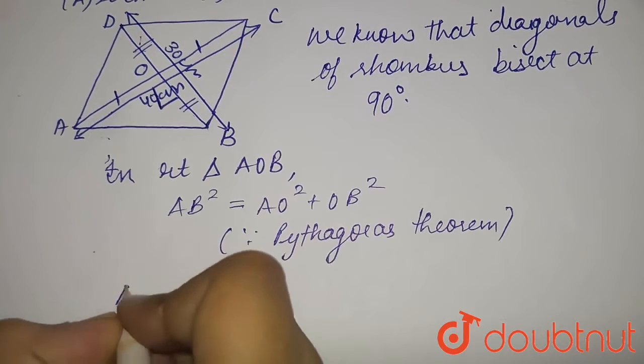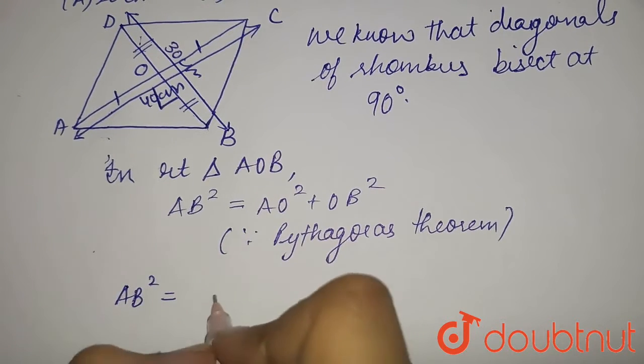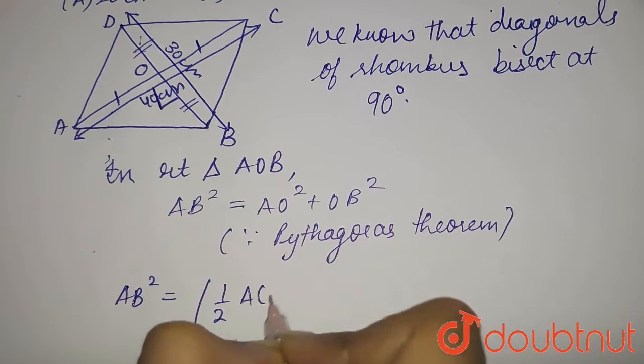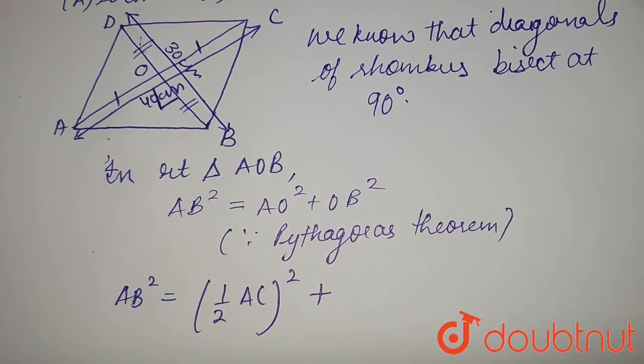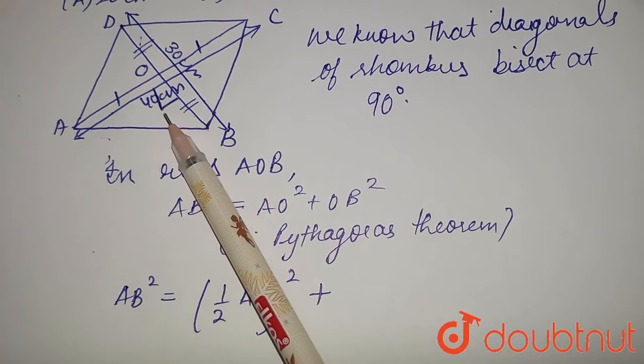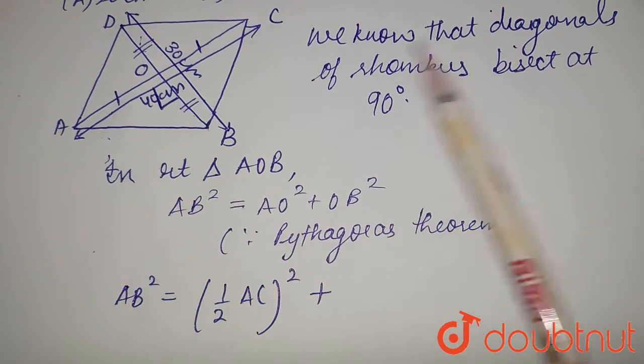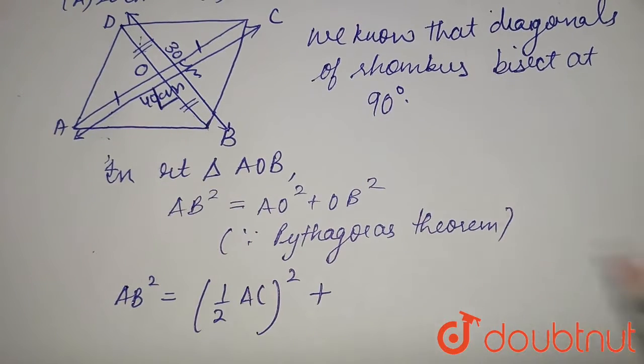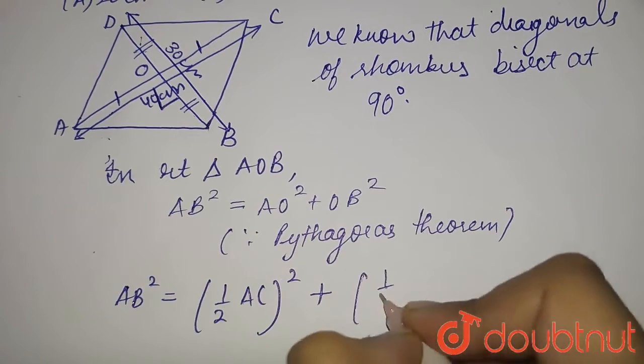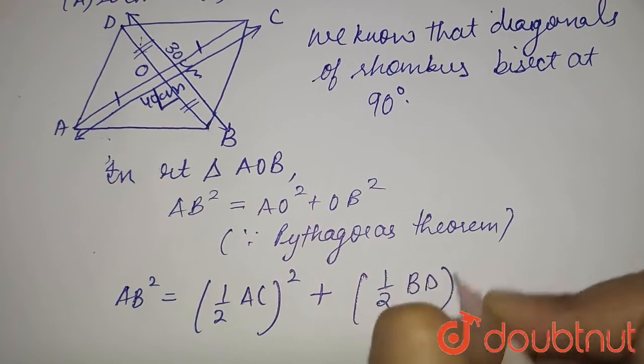So, AB² equals half of AC whole squared plus OB, that must be half of DB. Similar reason, diagonals of rhombus bisect at 90 degrees. So half of BD whole squared.